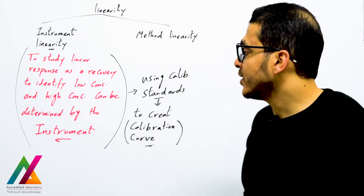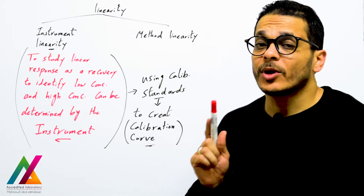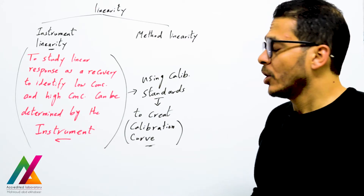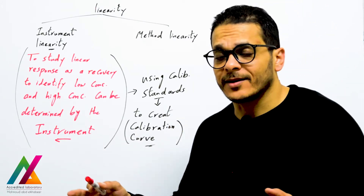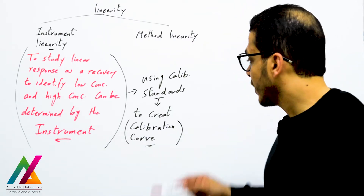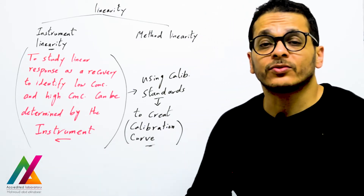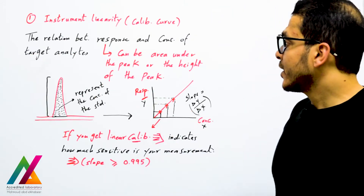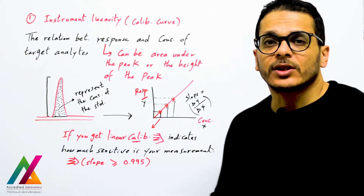Instrument linearity studies the linear response as a recovery to identify low concentration and high concentration that can be determined by the instrument only, not by the method. In this case, you will use only calibration standards — external standards — to prepare or create your calibration curve, which will be used for quantitation of target analytes in unknown samples.